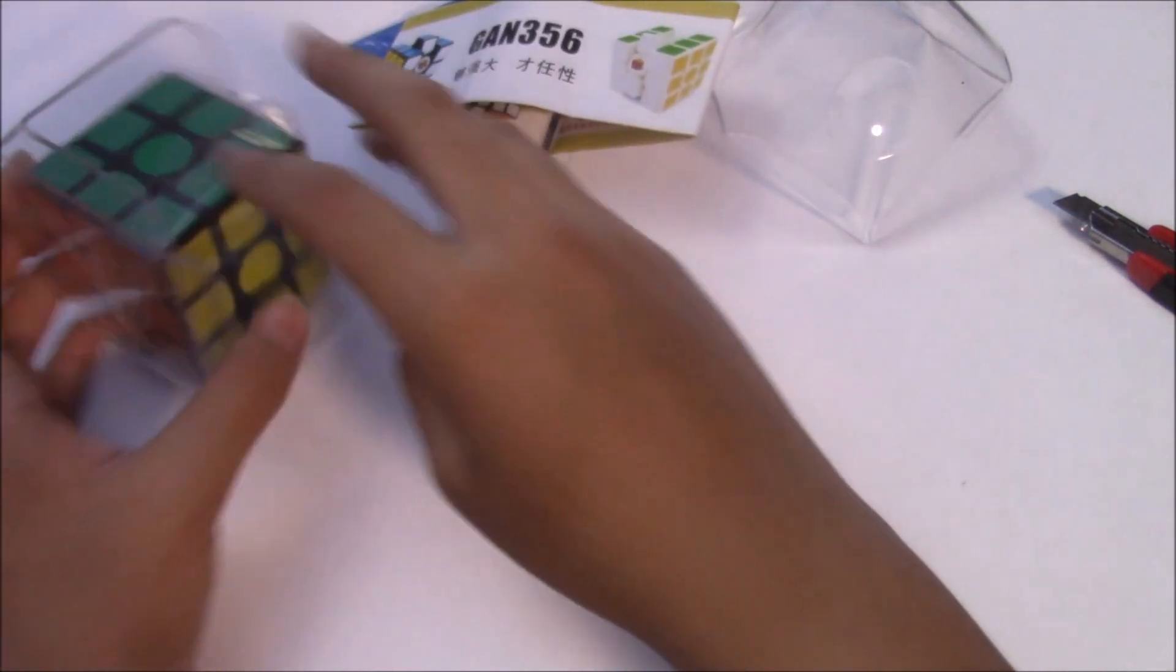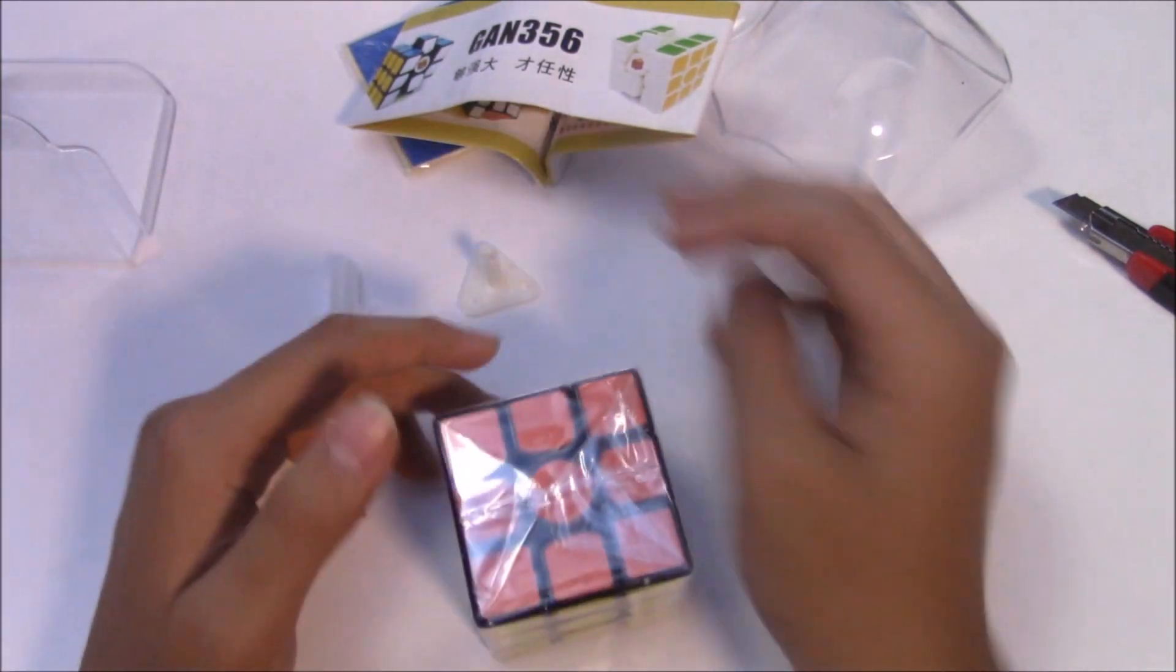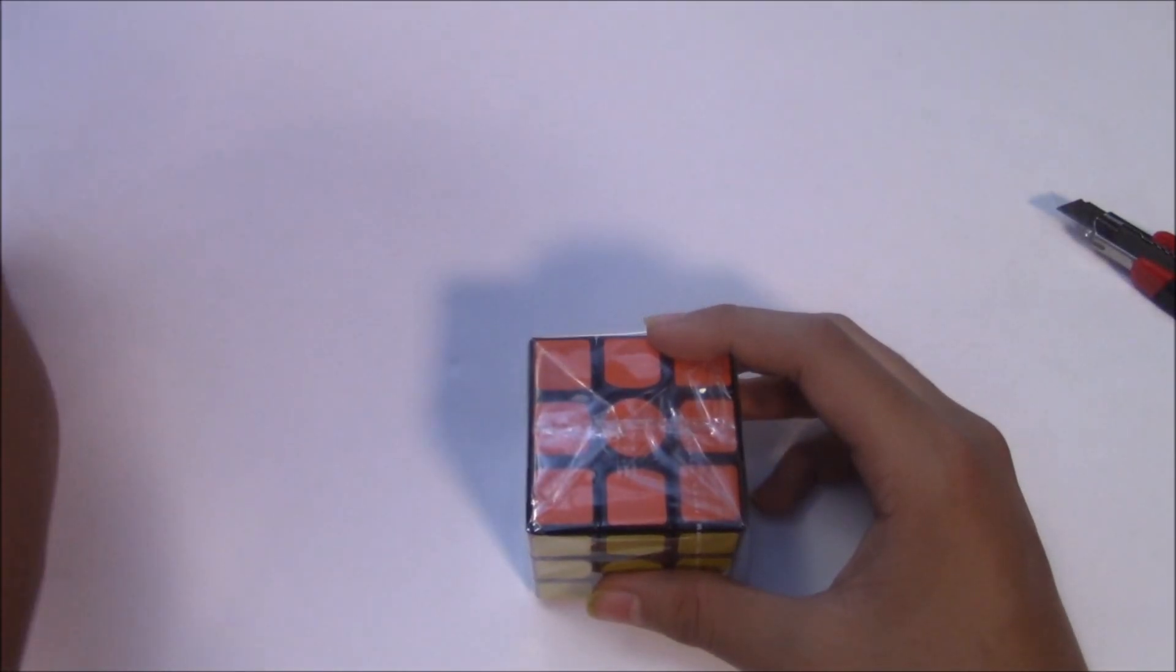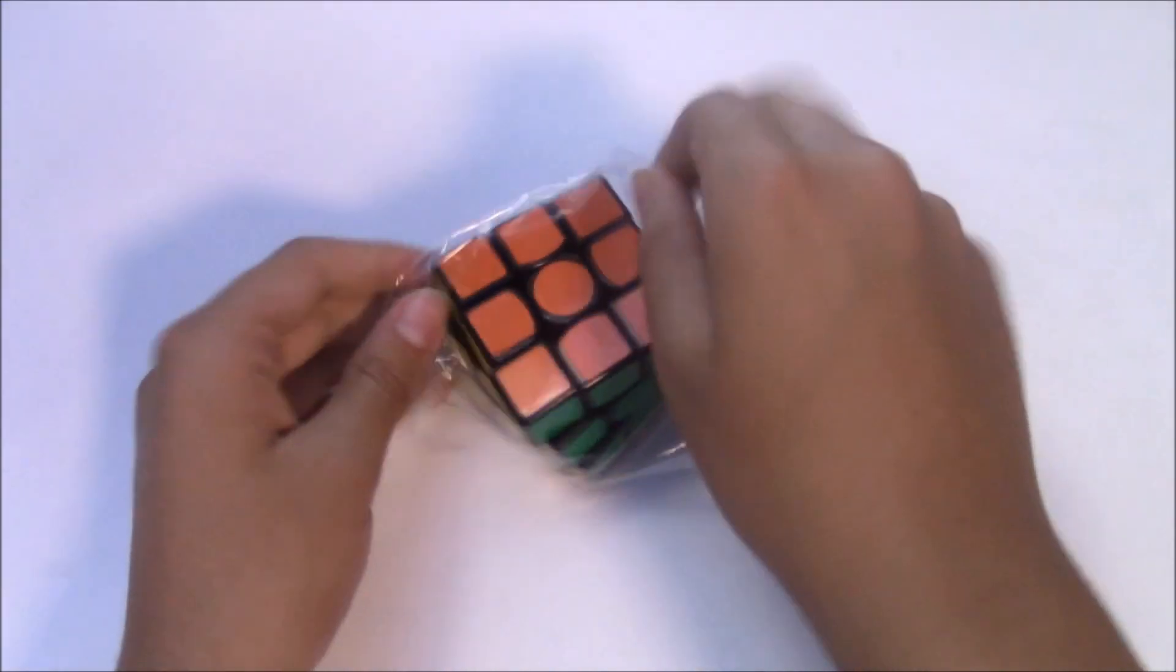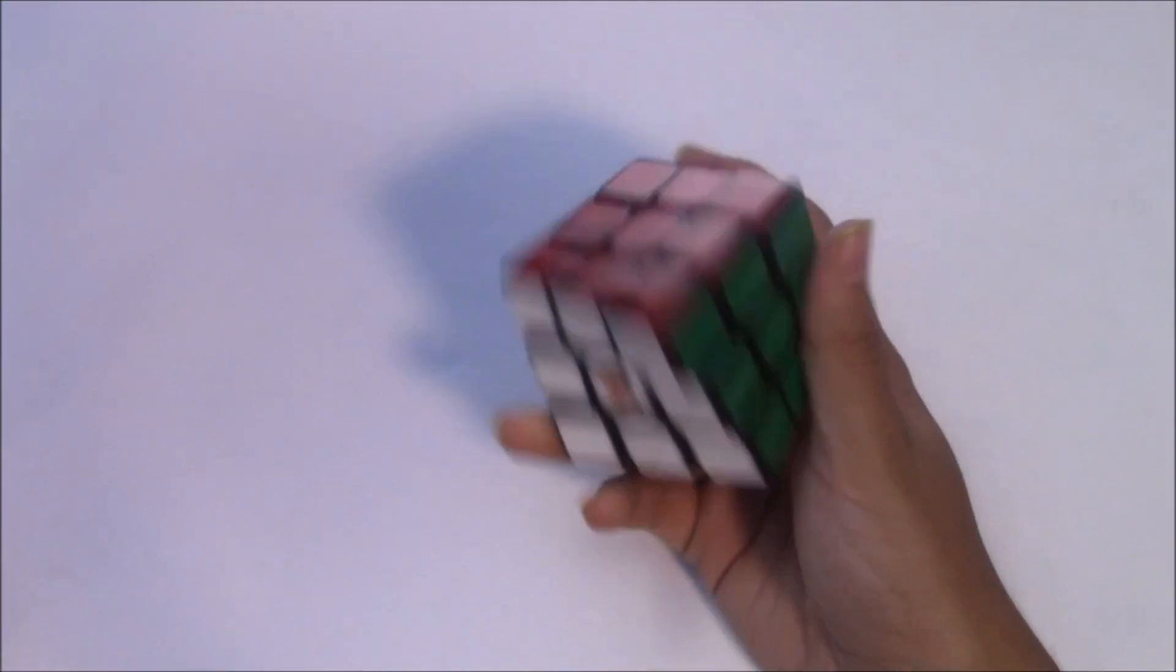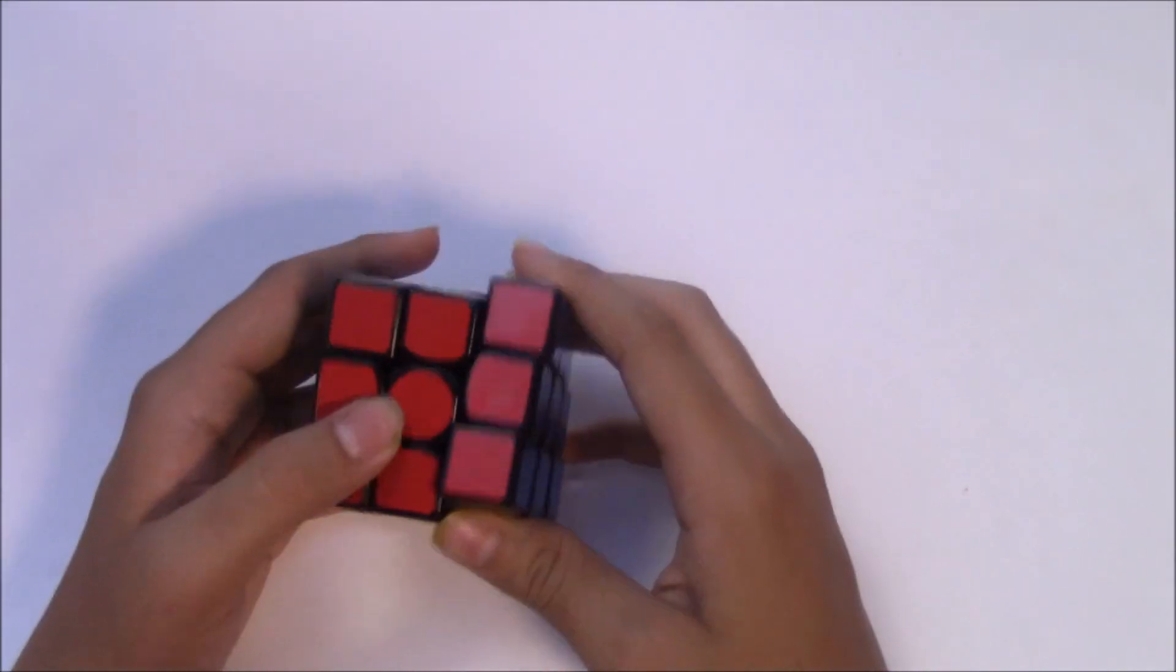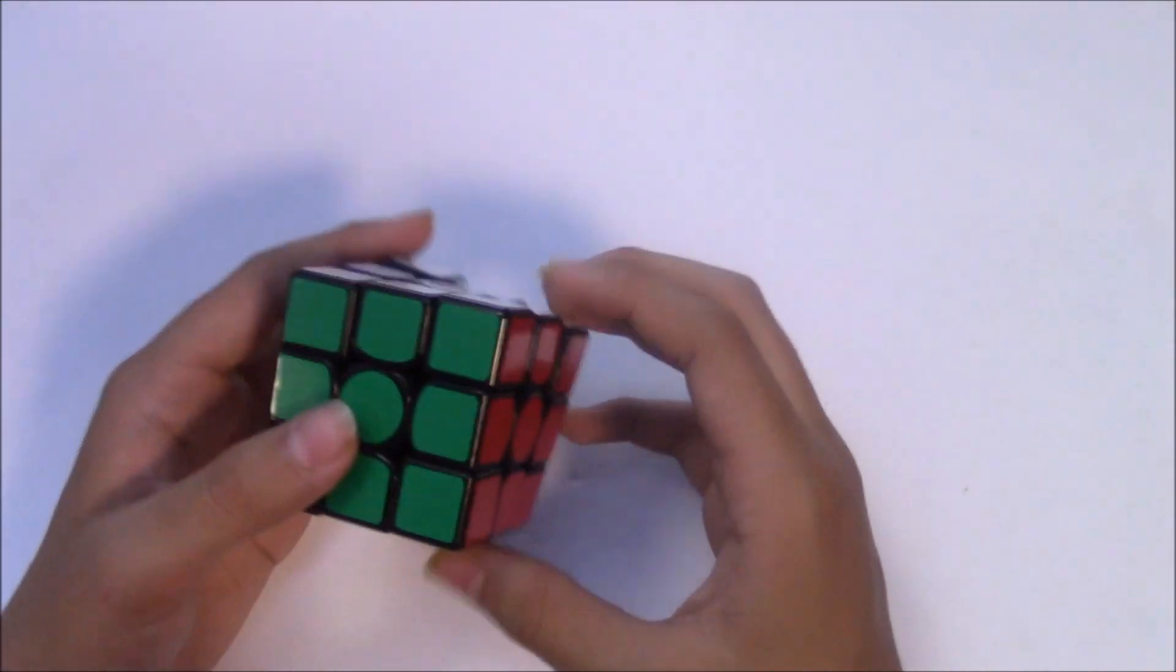And then here is the actual puzzle. That's pretty much all it comes with. Let's get rid of all this. This is the tensioning tool, but yeah, let's just get into this puzzle. There it is. Wow, it feels really luby. All right, let's get into first turns.